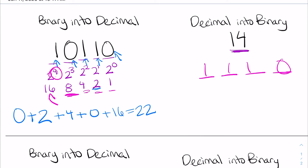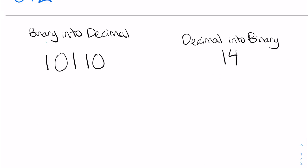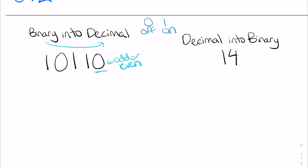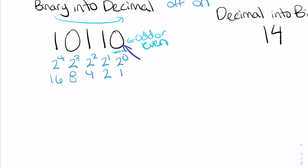When transferring binary into decimal, you always have to look at the first digit — this decides whether the number is odd or even. Whether a digit is zero or one shows if it's off or on. Every digit follows a system of two to the n, pushing every placeholder: two to the zero, two to the first, two to the second, two to the third, and two to the fourth.